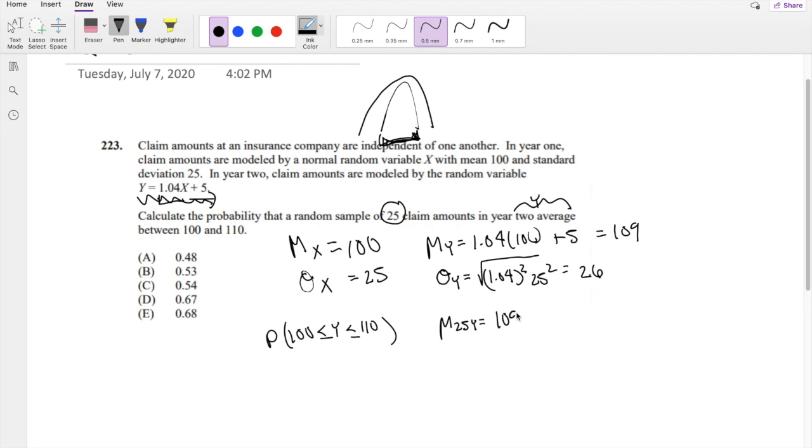So this is going to be 109 plus 109, all the way down 25 times over 25. Which we know, the average of all that number is just going to be 109.